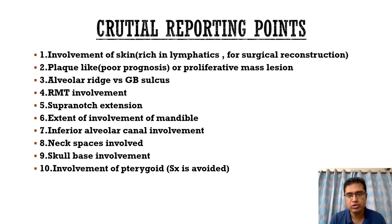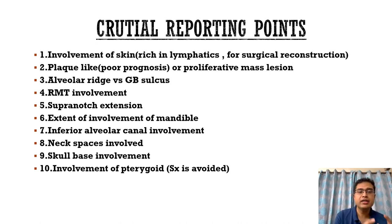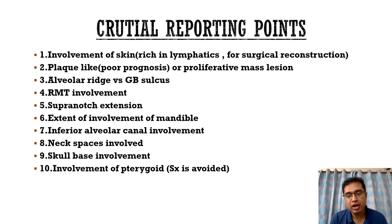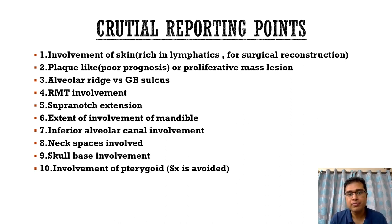In summary, the important points to remember while reporting oral carcinoma are: involvement of the skin — important for lymphatic spread and surgical reconstruction; the morphology of the lesion — whether plaque-like or proliferative; whether the lesion is epicentered in the alveolar ridge, gingivobuccal sulcus, or retromolar trigone; supra-notch extension — very important for surgeons; extent of mandible involvement for fibular graft reconstruction; the inferior alveolar nerve canal for perineural invasion; the spaces involved; skull base involvement; and involvement of the pterygoid muscles, which renders the tumor inoperable.